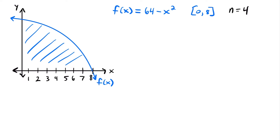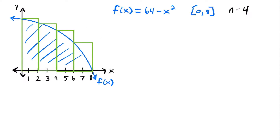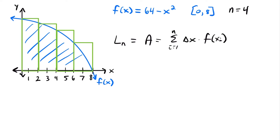Let's go ahead and draw those rectangles. Notice that this time I used the left-hand corner of each rectangle and met that up with our function — the left corner meets up with our function. That is the difference between finding the area with right endpoints or left endpoints: it changes which corner of your rectangle is touching your function. In this case, we write our area as L sub n, representing a Riemann sum using left endpoints.